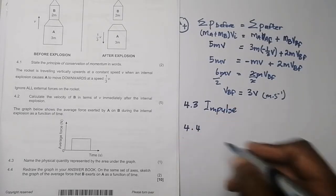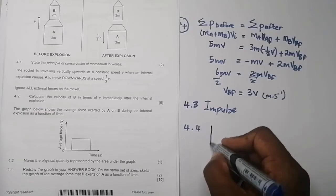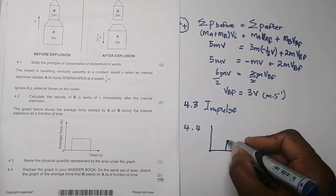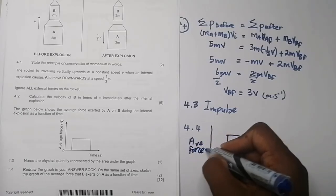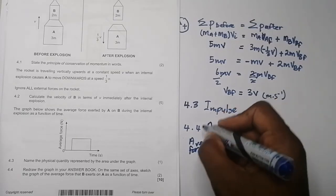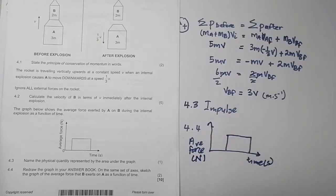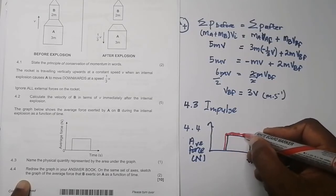The last question: they say redraw the graph in your answer book. On the same set of axes, sketch the graph of the average force that B exerts on A. Let's copy that one as is. This is the average force against time. Please remember, you must always label your axes: this is newtons, and this is seconds.